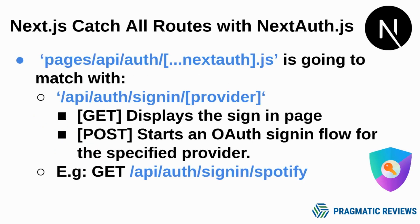Now let's see how NextAuth.js implements this catch-all routes mechanism provided by Next.js. When we use this library in our Next.js application, we define a route within the file pages/api/auth, where if we call this endpoint using the GET HTTP verb it's going to display the sign-in page using that provider. If we perform a POST request to that endpoint, it's going to start an auth sign-in flow for that specific provider.